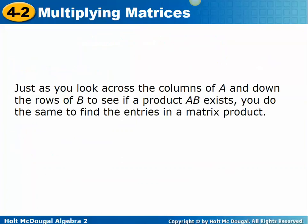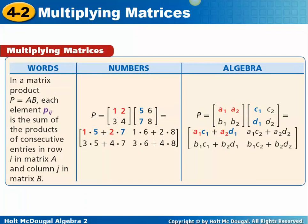Just as you look across the columns of A and down the rows of B to see if a product exists, you do the same to find the entries of a matrix product. Here we go — if it is defined, this is how you multiply matrices. We're going to multiply a 2 by 2 matrix by a 2 by 2, and because the 2s match, we'll be left with a 2 by 2 matrix.